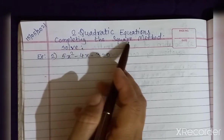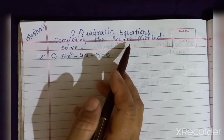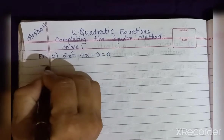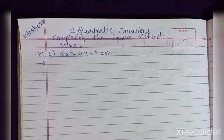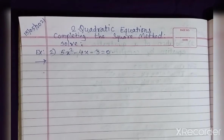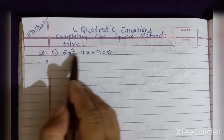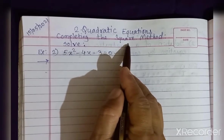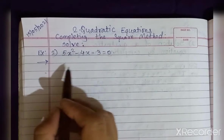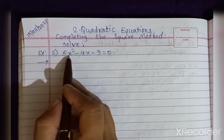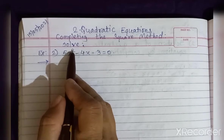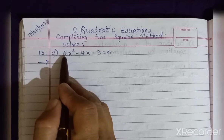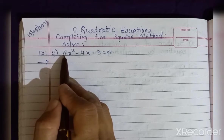Solve this quadratic equation by the completing the square method. Students, always keep in mind whenever we are going to solve a quadratic equation by the completing the square method, the coefficient of x² should always be 1.